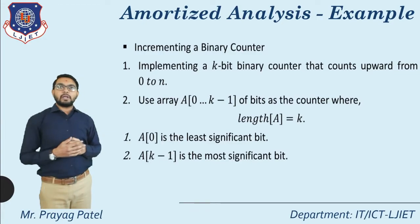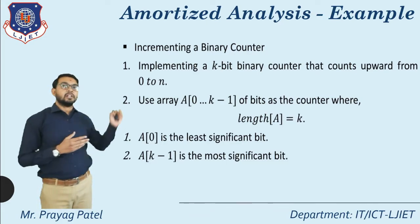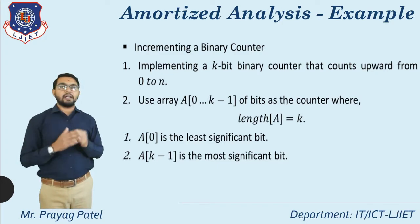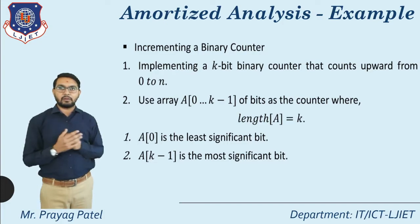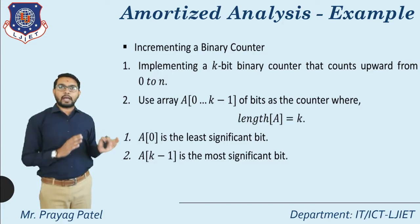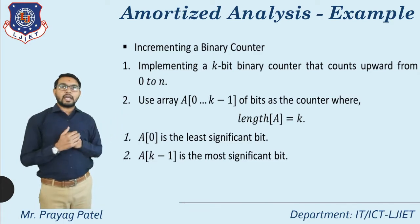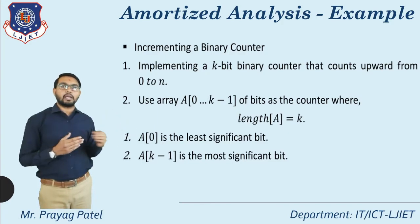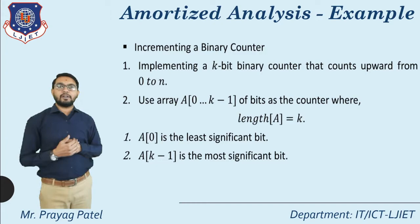Now consider one example to understand all three methods. The example is incrementing a binary counter. The first step is to implement a k-bit binary counter that counts upward from 0 to n. We use an array A of indices 0 to k−1 of bits as the counter, where the length of A equals k. Here A[0] is the least significant bit and A[k−1] is the most significant bit.